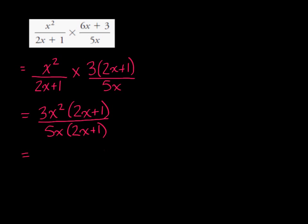And we can simplify here. We know that 2x plus 1 divided by 2x plus 1 is equal to 1. And we know that x squared divided by x is just x. And what we're left with then is 3x in the numerator times 1, and in the denominator, 5 times 1. And so this is our simplified form.